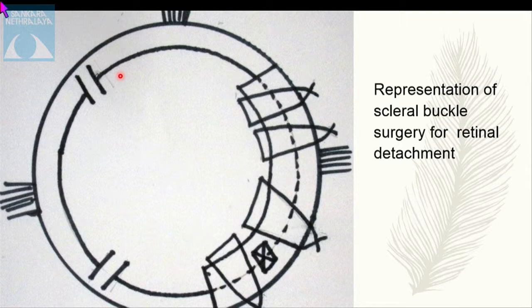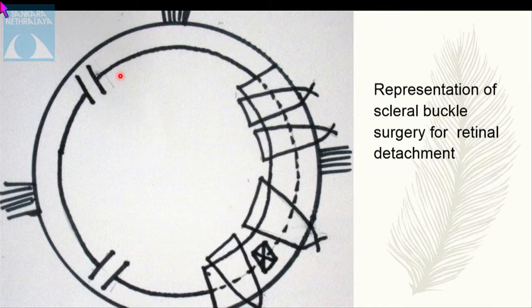In the buckle diagram, the inner part represents the posterior aspect and the outer part represents the anterior aspect. Posterior buckle suture bites are wider, whereas anteriorly they are drawn narrower. We usually put the knots anteriorly, which is why the knot is shown anteriorly in the diagram.